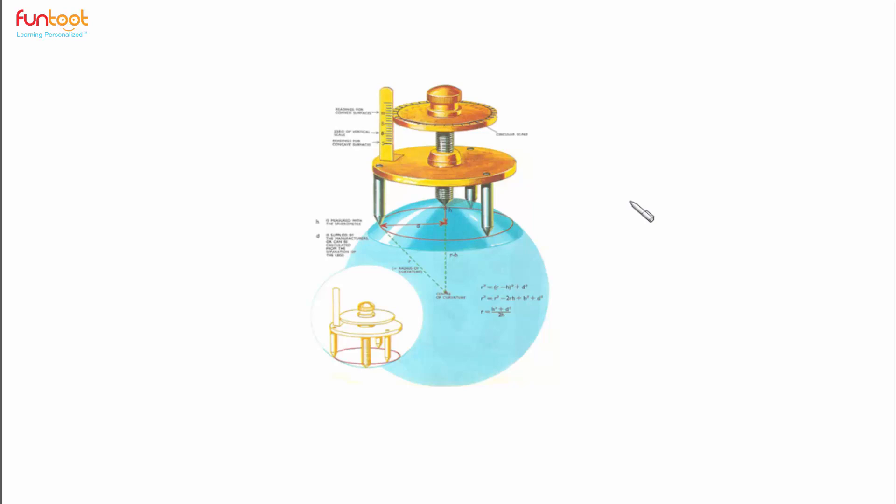Now let's see places where we apply properties of chords. This is a spherometer which is used for measuring the radius of curvature of spherical surfaces. So here we have a spherical mirror whose radius of curvature we have to find out, and the bottom portion just denotes that this spherical mirror is a part of sphere.